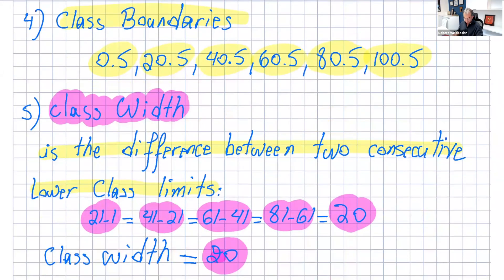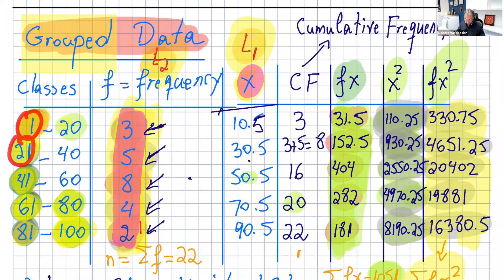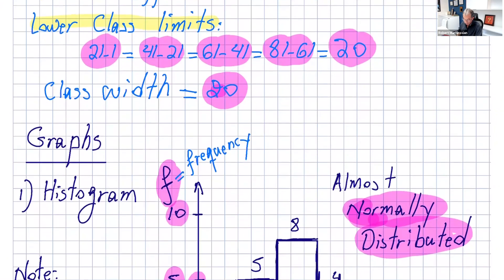Then we have the class width. The class width is the difference between two consecutive lower class limits. So 21−1=20, 41−21=20, and it's always the same. 61−41=20, and 81−61=20. So the class width here is 20. You can just do one calculation — it's always 20.